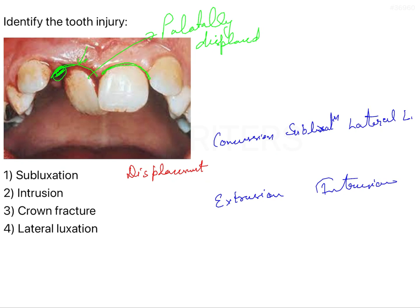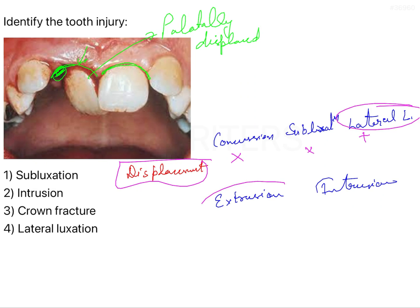Looking at the displacement here: in concussion there is no displacement of the tooth, and in subluxation there is also no displacement. Lateral luxation, extrusion, and intrusion will show displacement of the tooth. So we can easily rule out subluxation and crown fracture from the options.